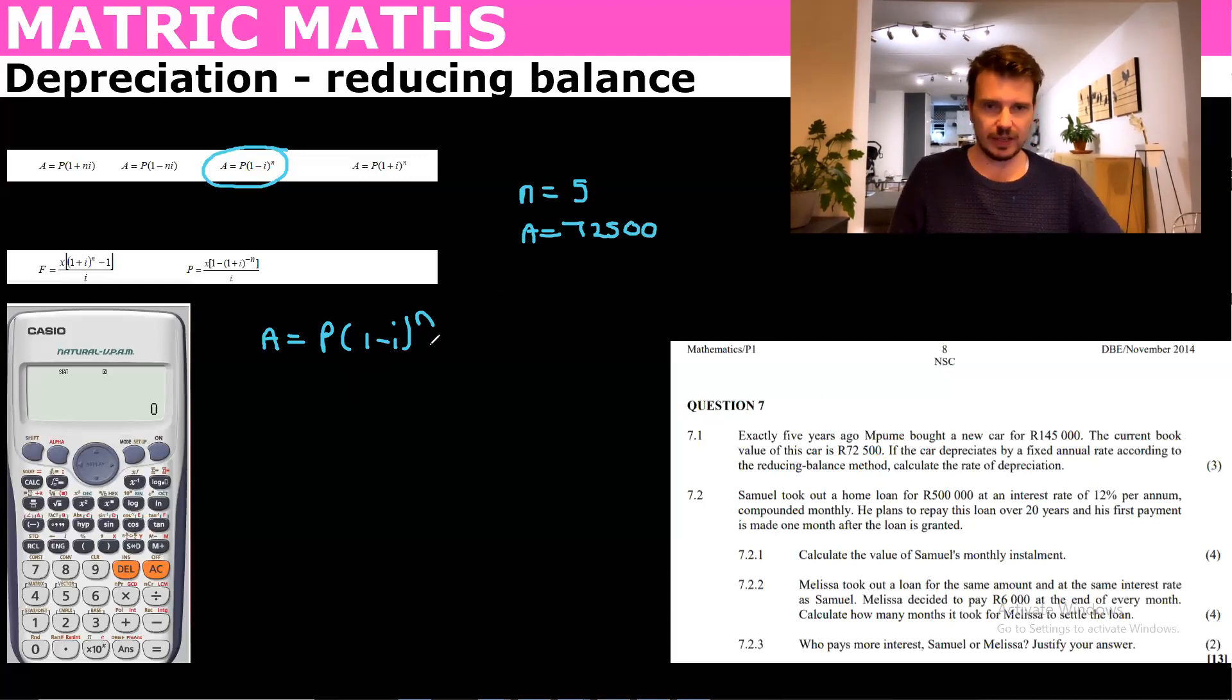And then the P is the present value, so this would have been the value at the time that he bought the car. So basically we take that as $145,000. If we think about it logically, $145,000 reduces to $72,500. So now we just simply put that in and so we say $72,500 equals $145,000 times (1 minus i) to the power of 5.